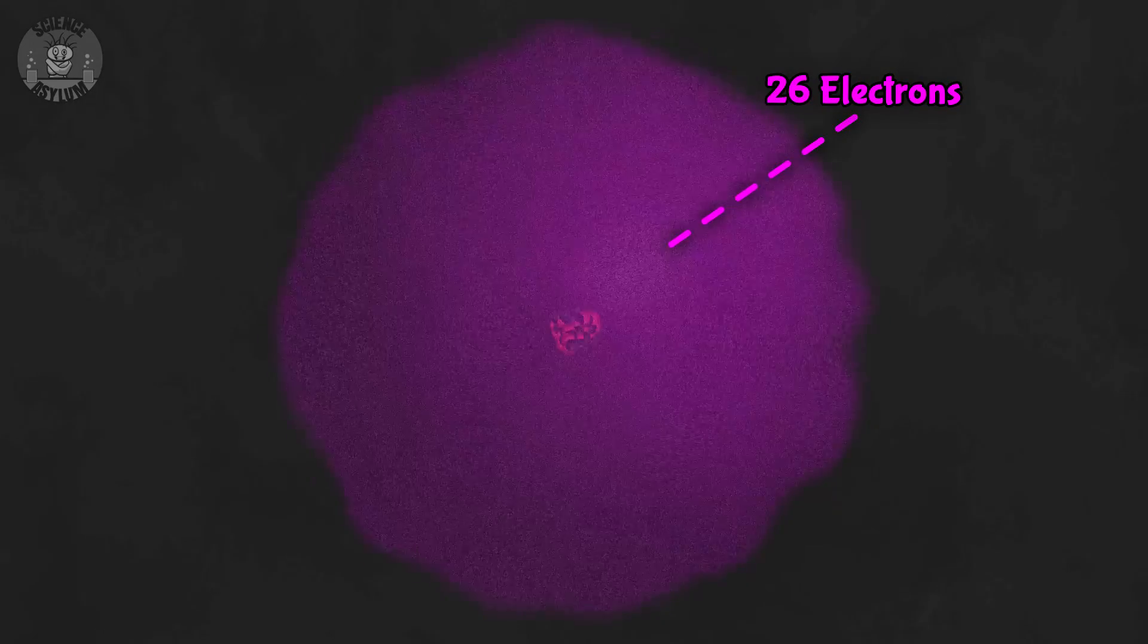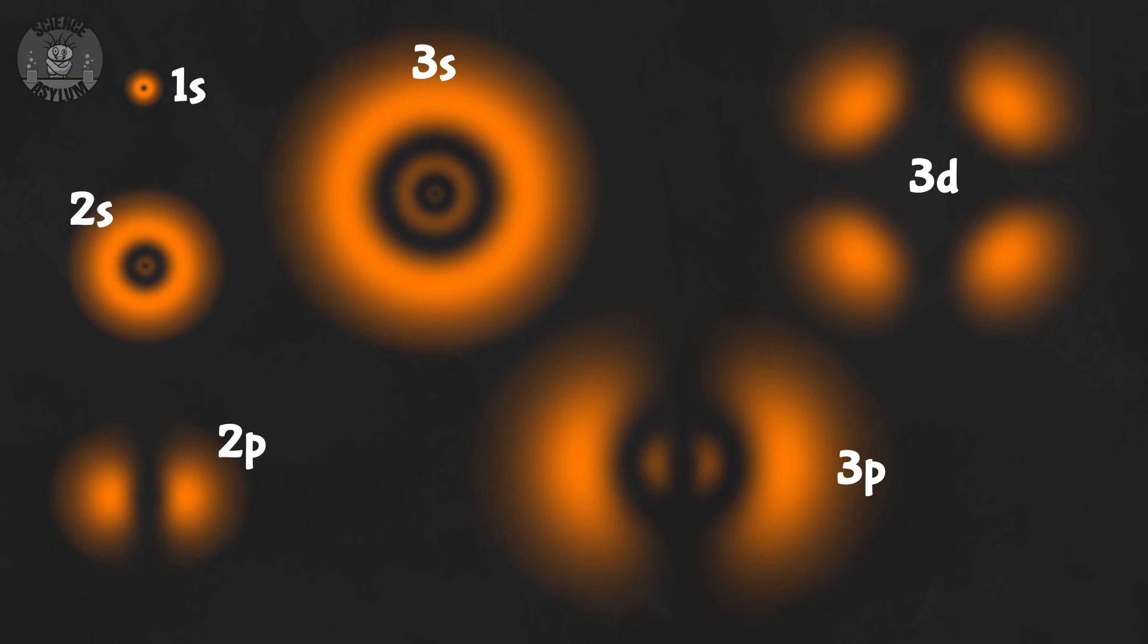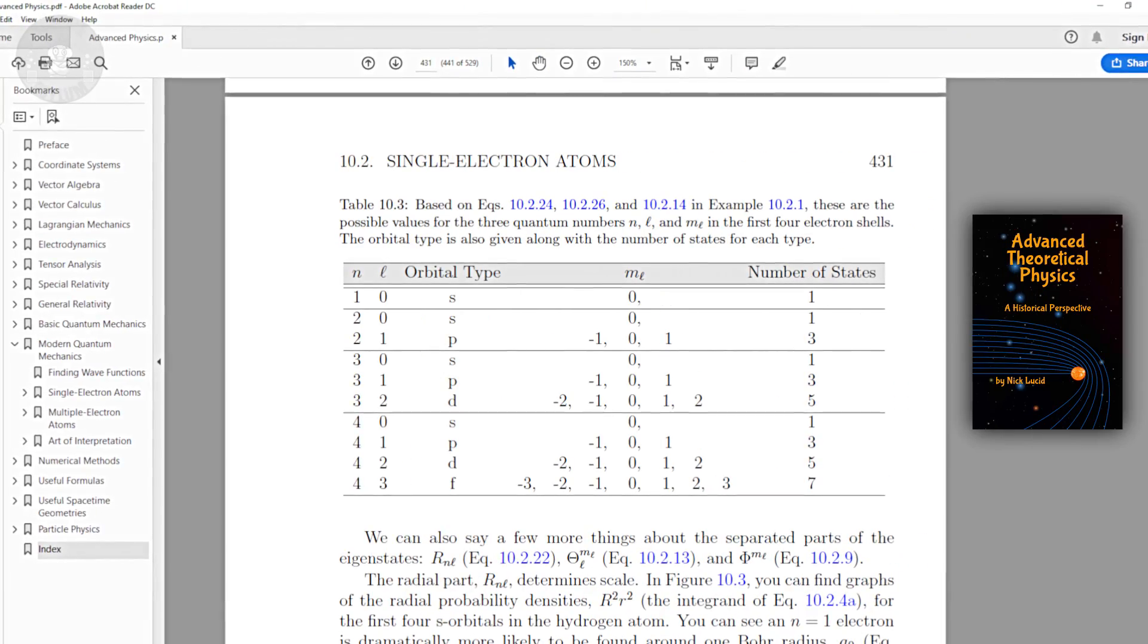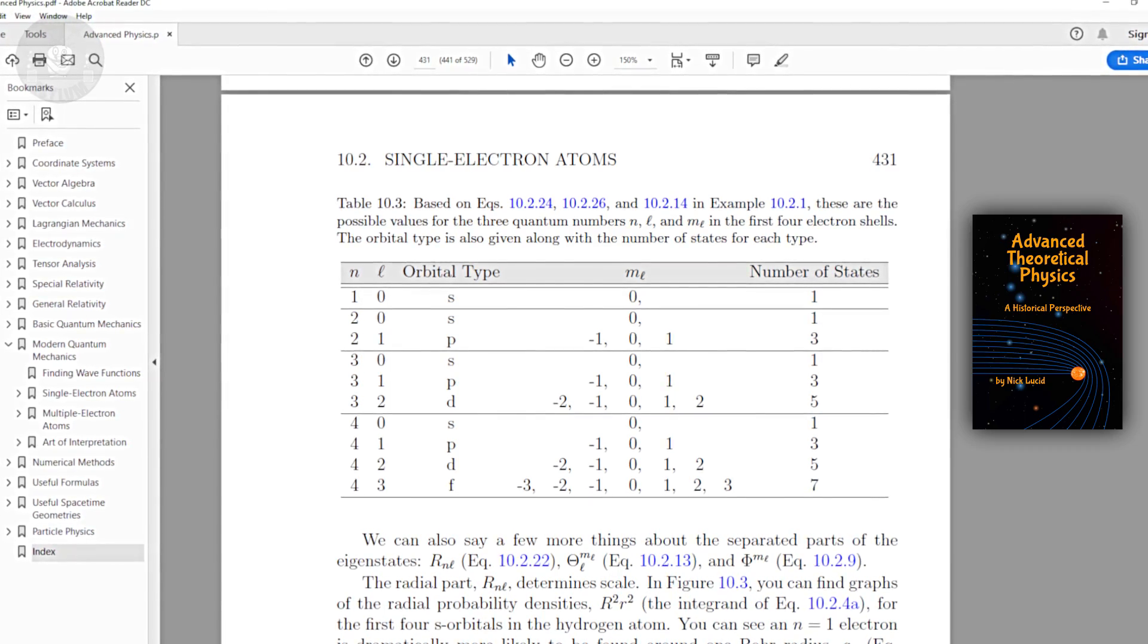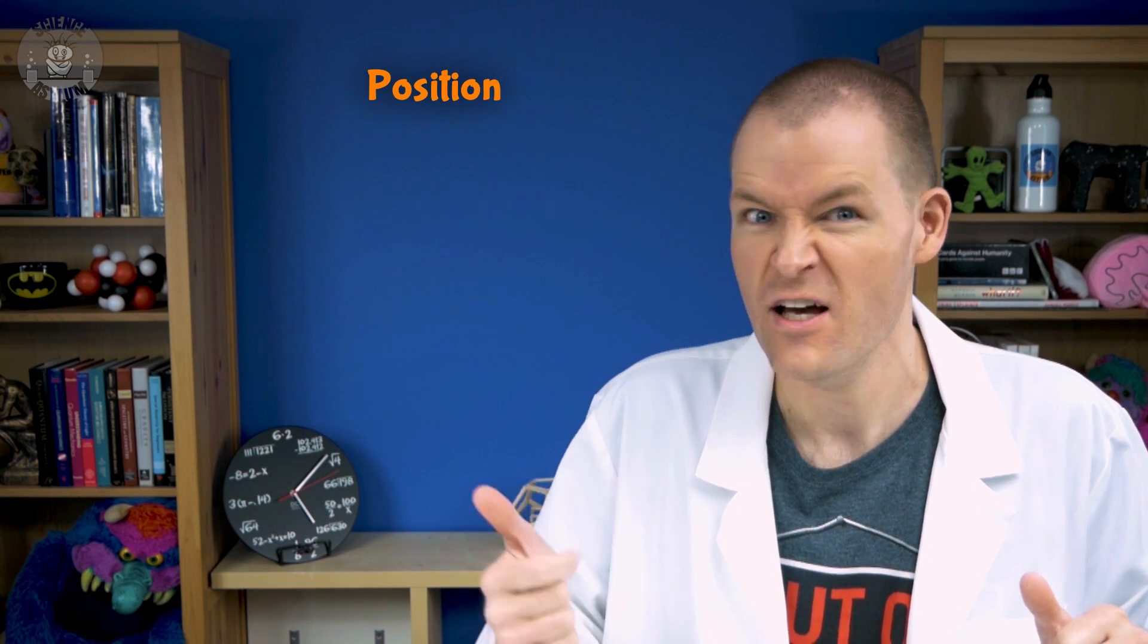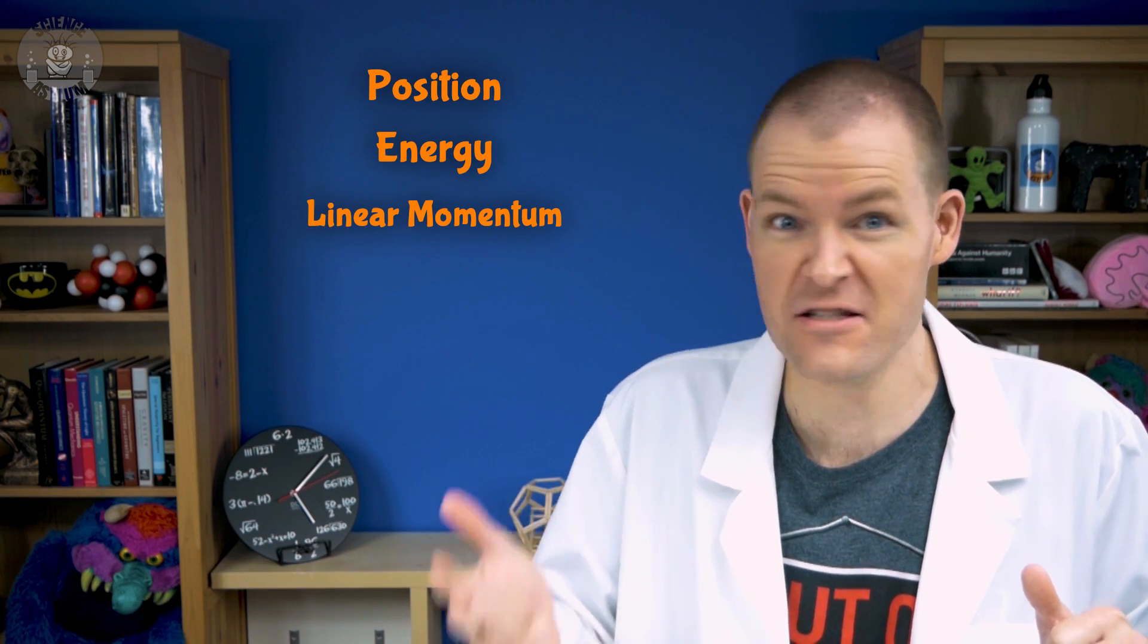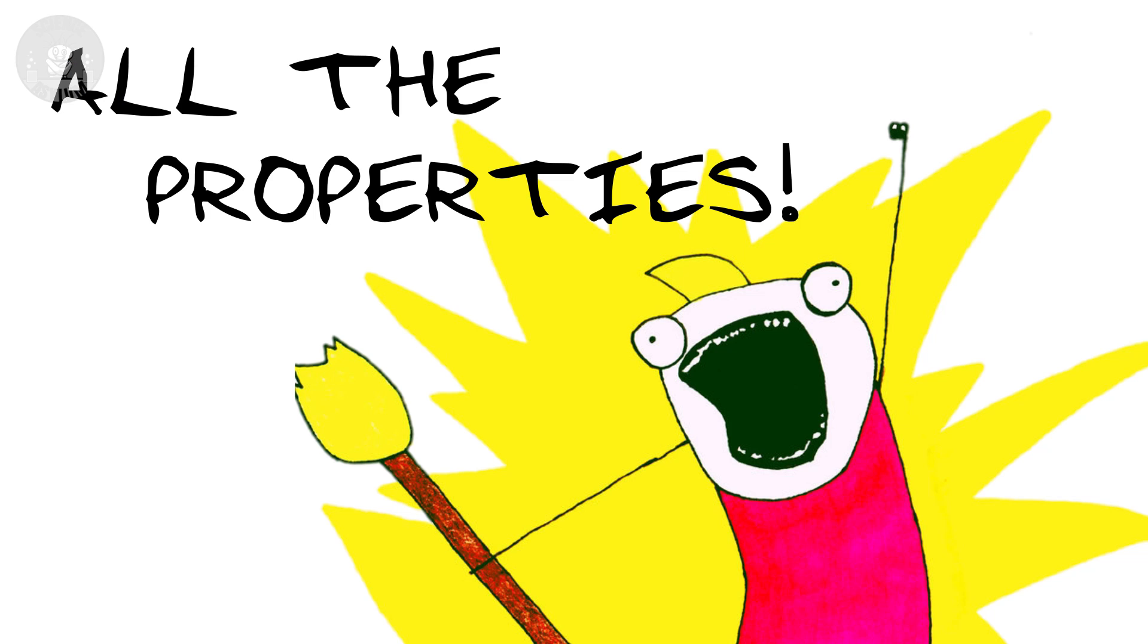This cloud of negative charge is made of 26 electrons. Each of those electrons is in something called an orbital. Those come in a variety of shapes, each with a set of available properties. But, we need to be careful. Quantum particles can have all sorts of properties. Position, energy, linear momentum, angular momentum, all the properties.